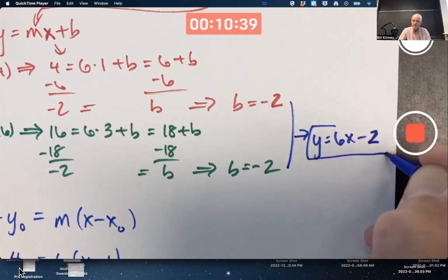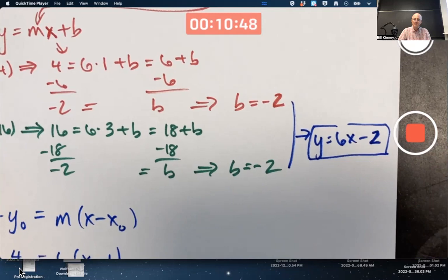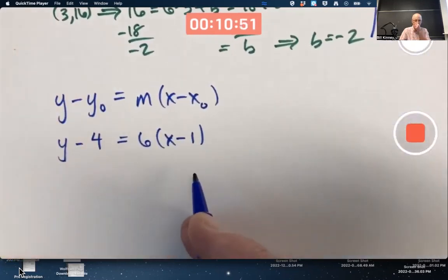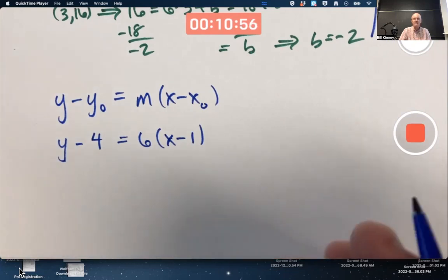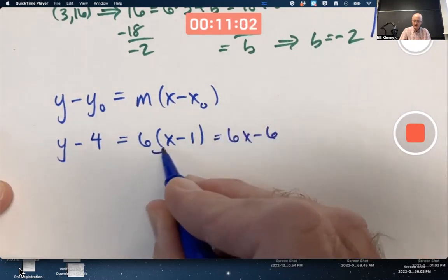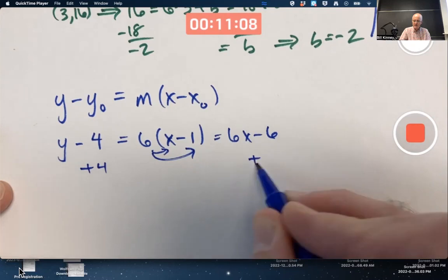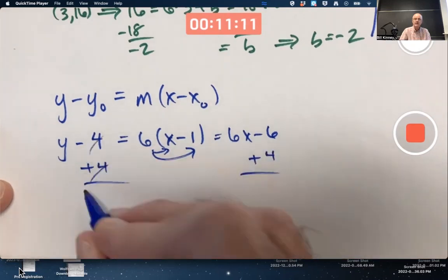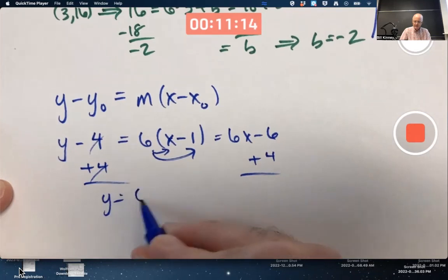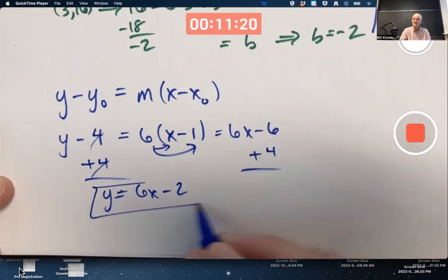That's point slope form. To solve for slope intercept form, I should solve for y. I can expand with the distributive property. To solve for y, I need to get rid of that minus 4 on the left, so I add it to both sides. Cancel it. So y equals, once again, 6x minus 2. Same answer as before.